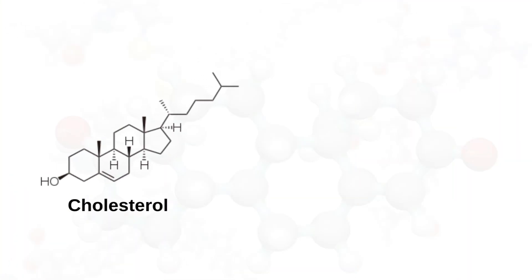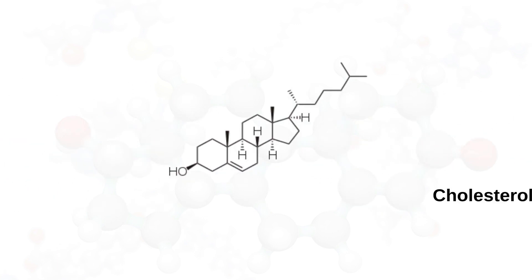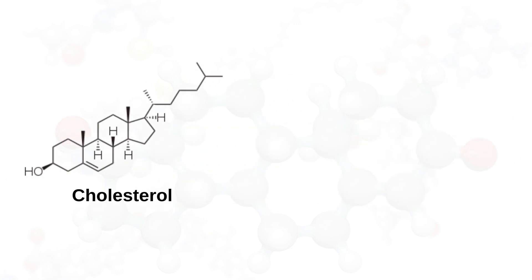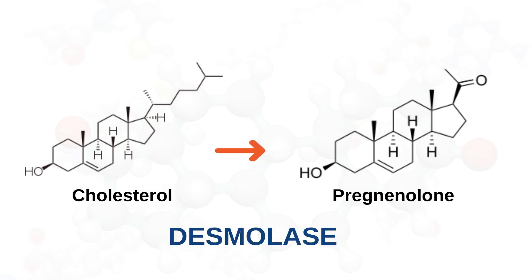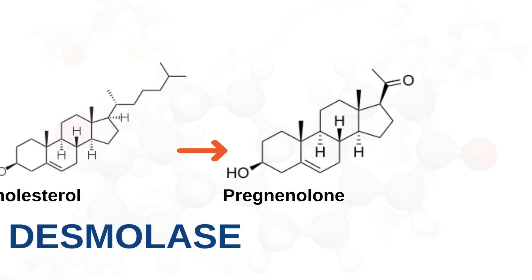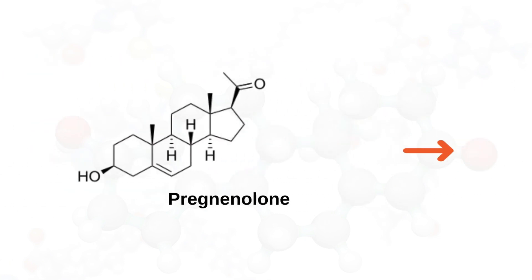Steroidogenesis from cholesterol to estradiol. Cholesterol is converted to pregnenolone, and this reaction is catalyzed by desmolase. This is the rate-limiting step in the steroidogenic pathway.